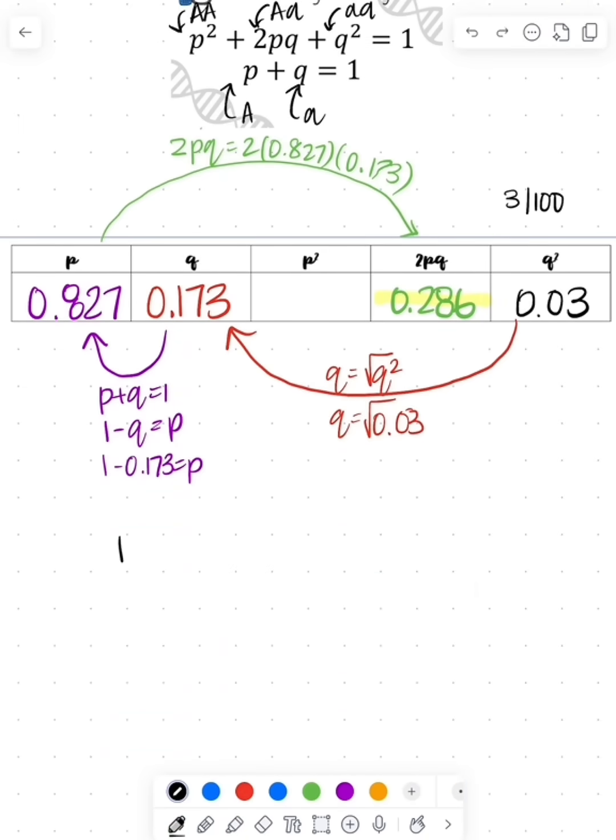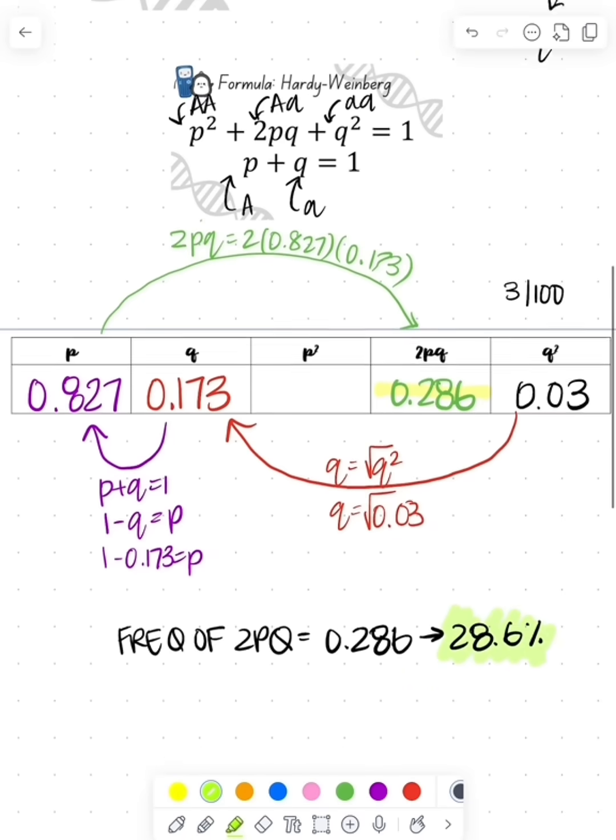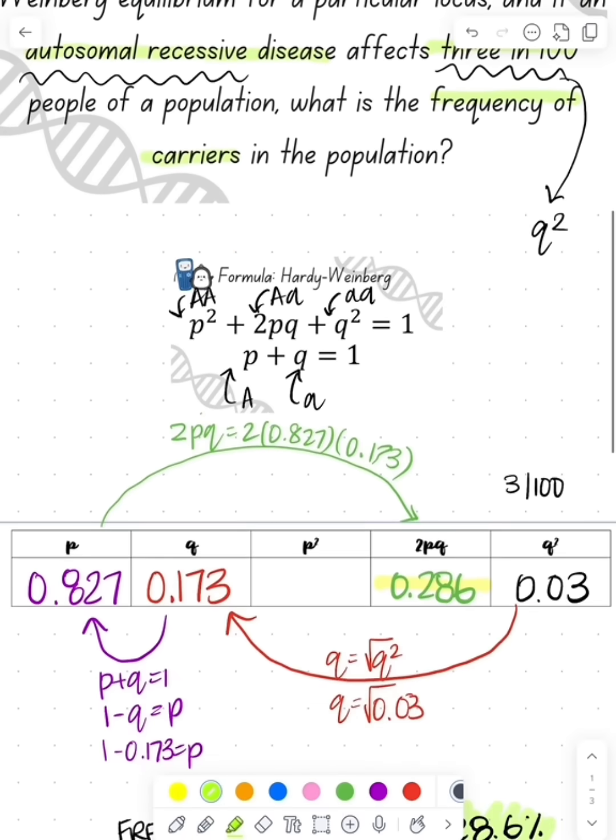And so the frequency would of course be 0.286. If they ask you for a percent, that'd be 28.6%. I hope that this was helpful. Remember that AP Bio Math Minute is just success. Bye y'all.